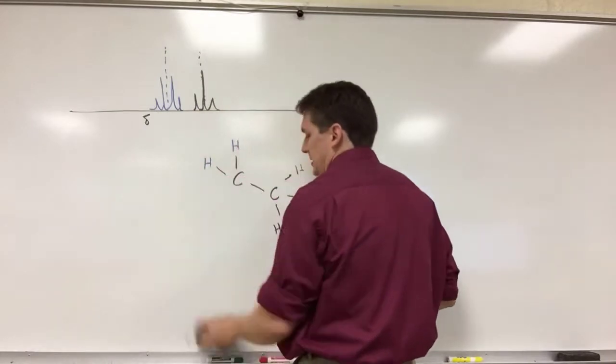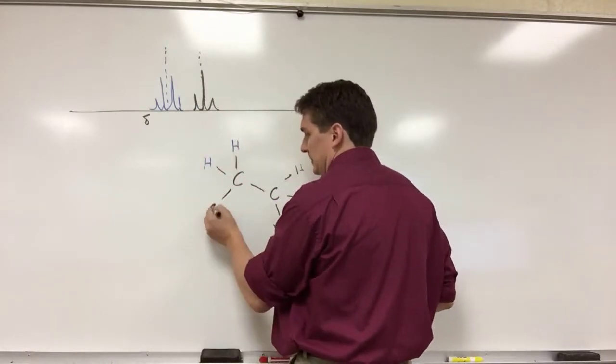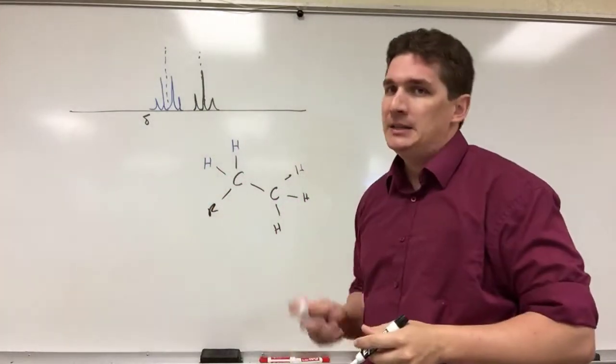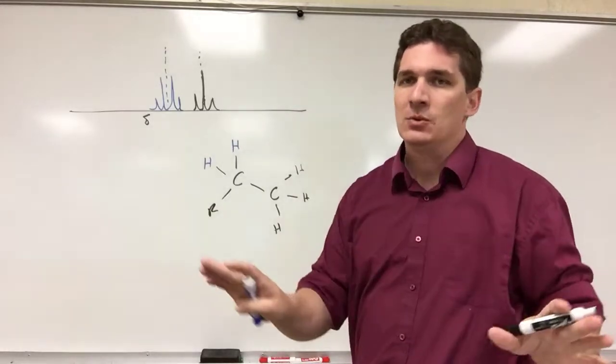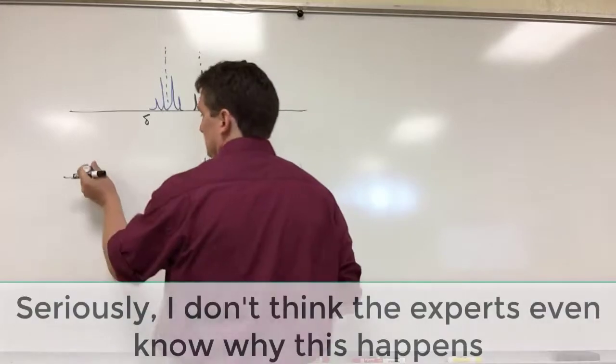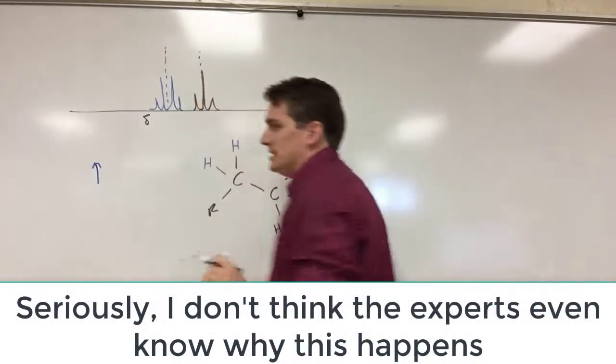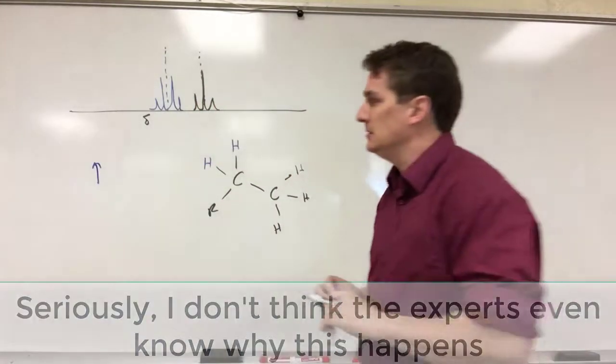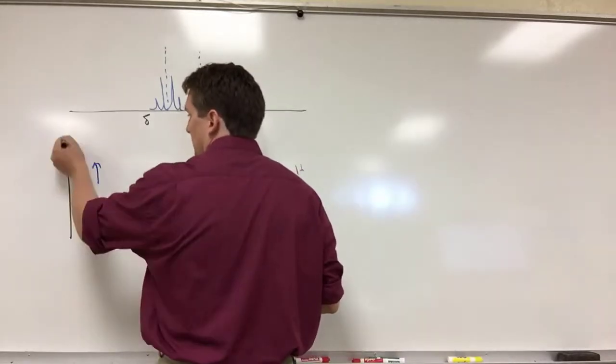So how do we explain J-coupling? Well the way we look at it again, just take my word for it, this is how we explain it. If we were to look at this blue hydrogen, in principle it's aligned with the atom. It's aligned with the magnetic field.